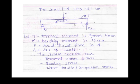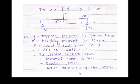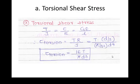For torsional shear stress, we use T/J = τ/r = Gθ/L, giving τ = T·R/J. The axial thrust F creates a direct tensile or compressive stress — tension on one side and compression on the other — which is a normal stress equal to F divided by the cross-sectional area. For a circular section of diameter D, this area is π/4 · D².